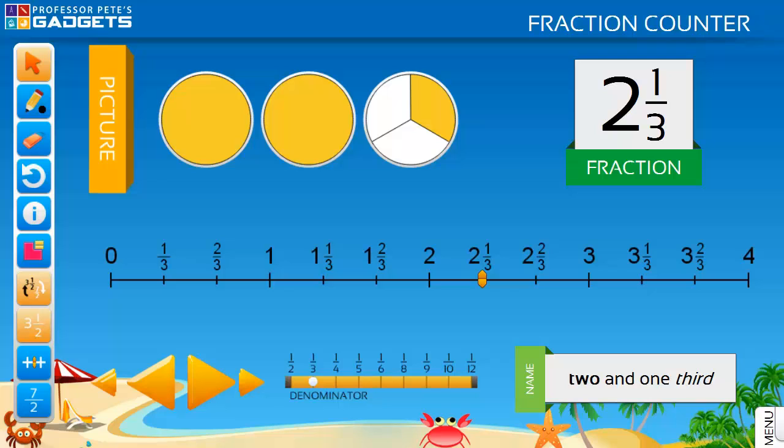The number line is a powerful teaching tool as it not only allows counting in mixed numbers but can also show the corresponding improper fractions. The number line can show both, either, or none of the fractions.